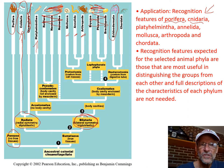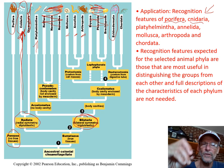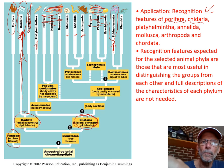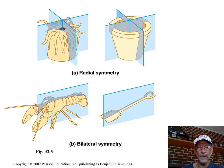Symmetry is a big distinguisher. True radial symmetry brings only the Cnidarians into play — that would be their key distinguisher. All the rest are bilateral, except for the echinoderms, which have pentaradial symmetry. That's their key distinguishing characteristic. All the other bilateral groups then need some other characteristic to distinguish them.